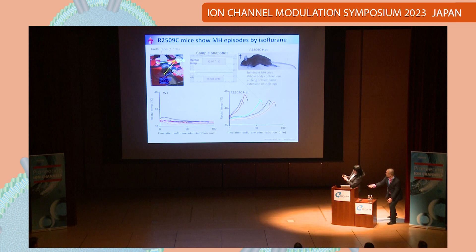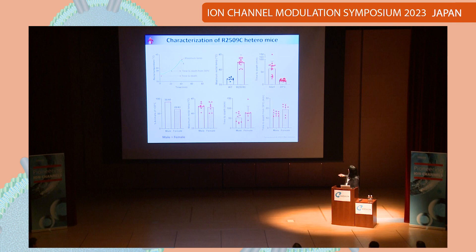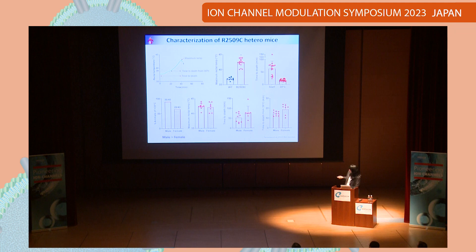The maximum temperature reached was 42 degrees. We analyzed three indices: maximum temperature, time to death from start of isoflurane exposure, and time to death from 39 degrees. There was a significant increase of rectal temperature in heterozygous mice. We also carried out sex difference analysis. There were no sex differences in the three indices — maximum temperature, time to death, and time to death from 39 degrees. However, male mice were more sensitive compared with female mice.